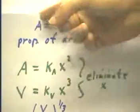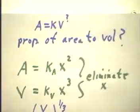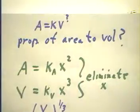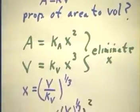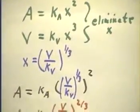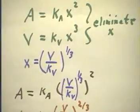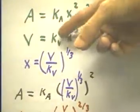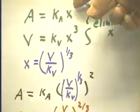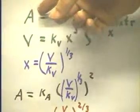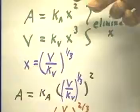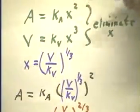Once we've eliminated x, maybe we'll end up with A equals k V to some power. Let's see what we're going to do. We're going to choose to solve the second equation for x, and then we're going to plug that into the first equation. That'll give us A equals something—remember, we wanted A equals k times V to some power.